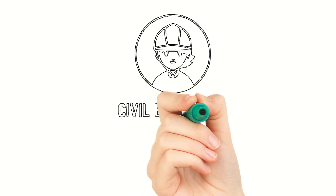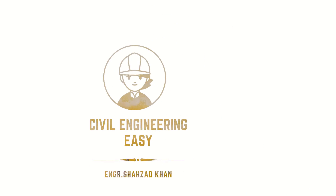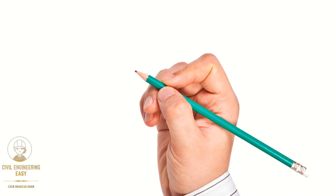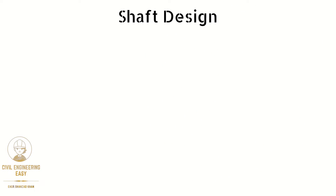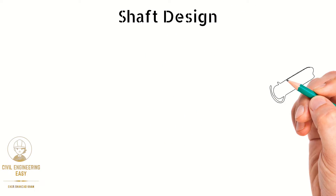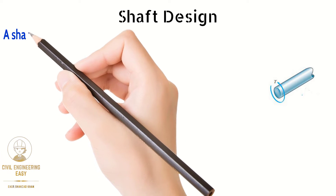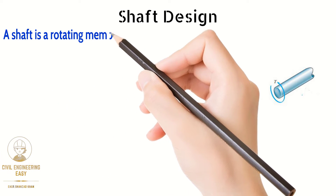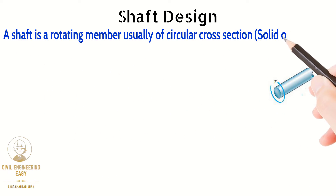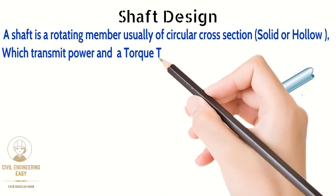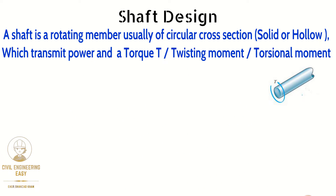Welcome back to my YouTube channel Savile Engineering Easy. I am Engineer Shahzad. Today I am going to solve one of the short numerical examples related to the design of shaft. A shaft is the rotatory member, usually of a circular cross-section, solid or hollow, which transports power and rotational motion.